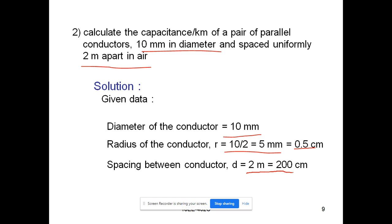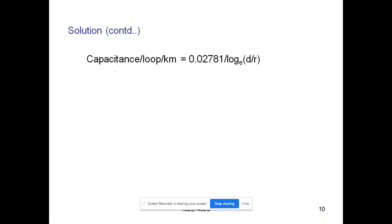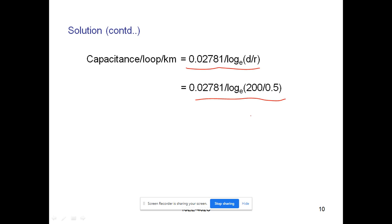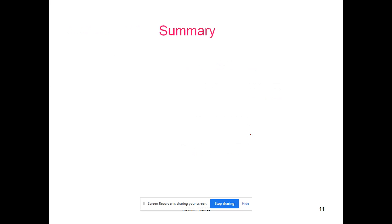Using the formula, capacitance per loop per kilometer = 0.02781 / log_e(d/r). Substituting the values: 0.02781 / log_e(200/0.5), which gives 0.00464 microfarads per kilometer.